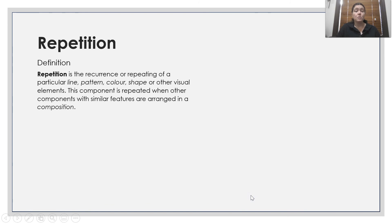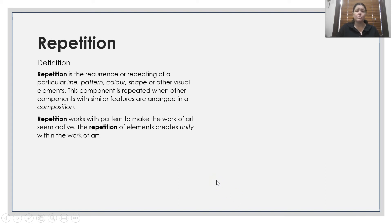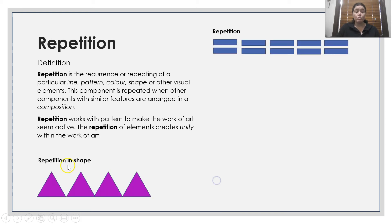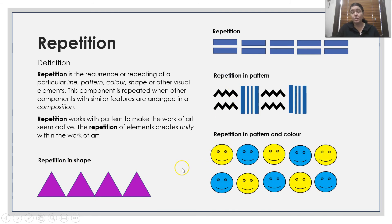Repetition. Repetition is the reoccurrence or repeating of a particular line, pattern, colour, shape or other visual element. This component is repeated when other components with similar features are arranged in the composition. Repetition works with pattern to make the work of art seem active. The repetition of elements creates unity within the artwork. So repetition in shape, repetition in pattern, and repetition in pattern and colour.